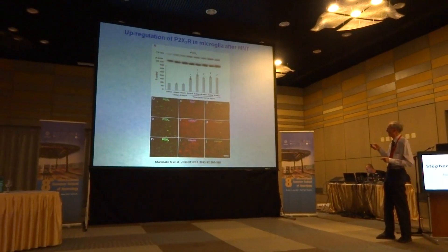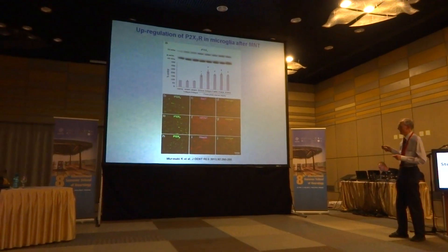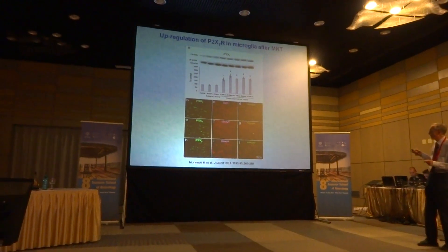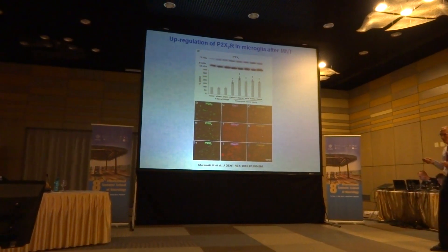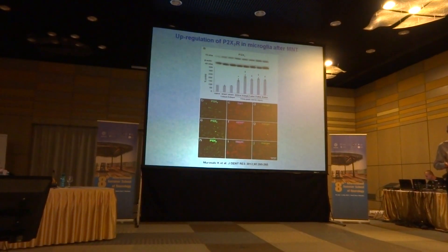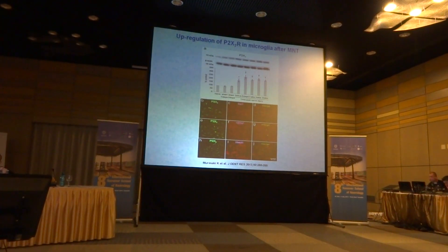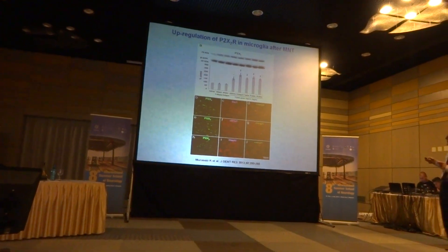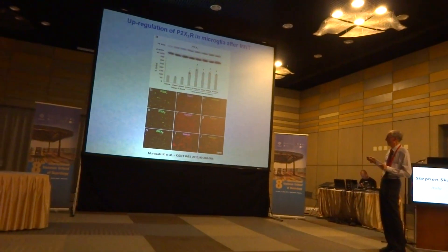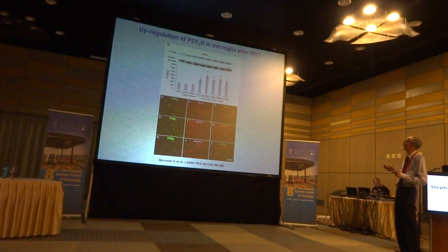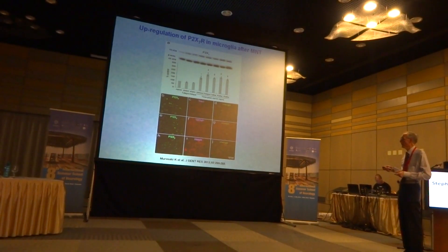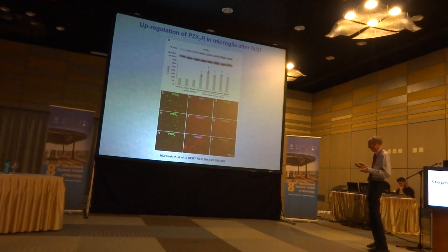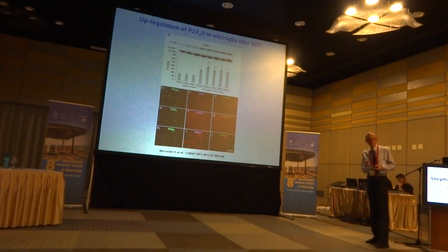This last example is where the authors did what is called a mental nerve transection. It's the third branch of the trigeminal nerve, which innervates the teeth. Cutting this nerve led to upregulation of P2Y7 receptor in the nerve. There is also co-localization of P2Y7 receptor upregulation in the nerve with cells which express markers for microglia.